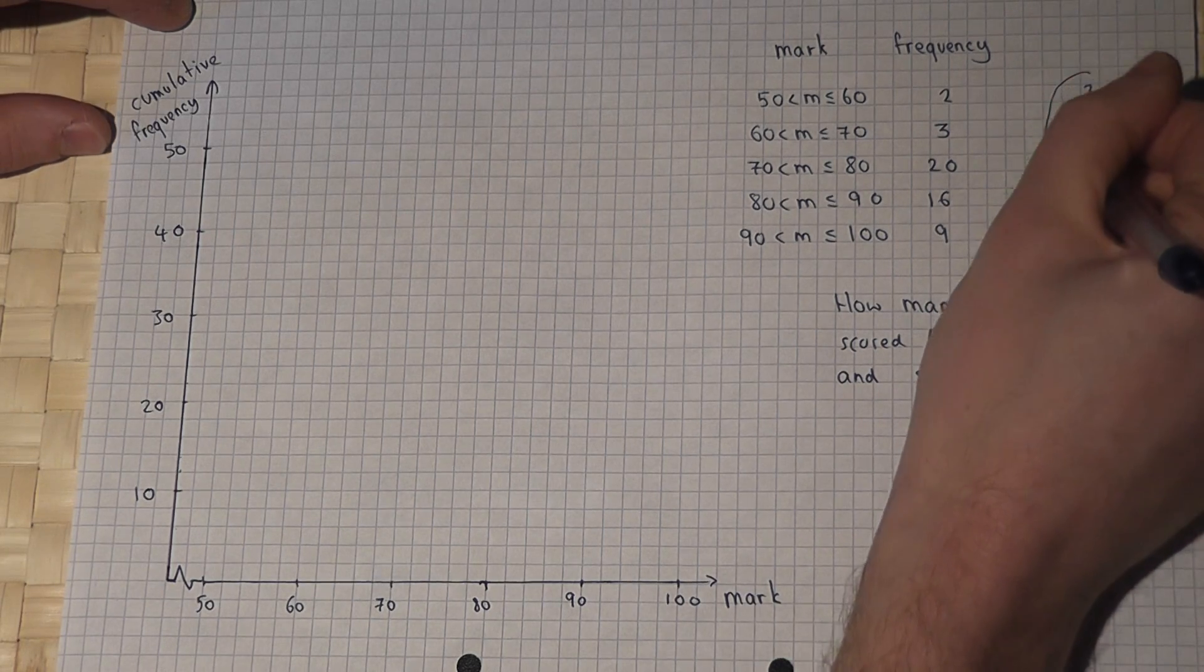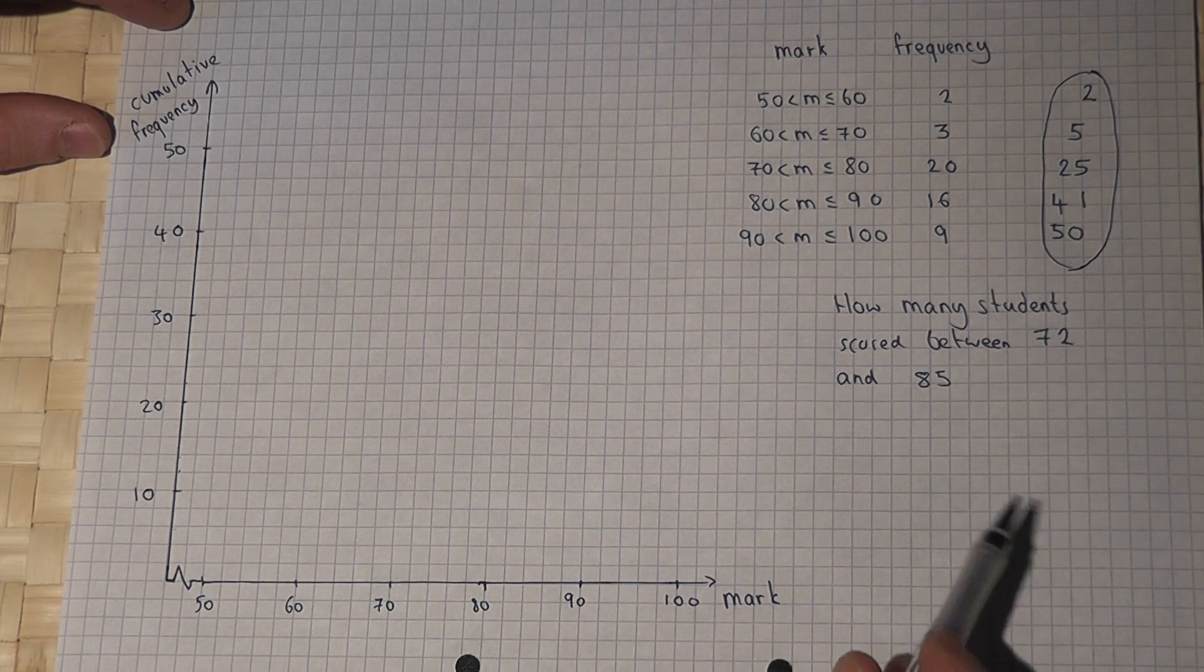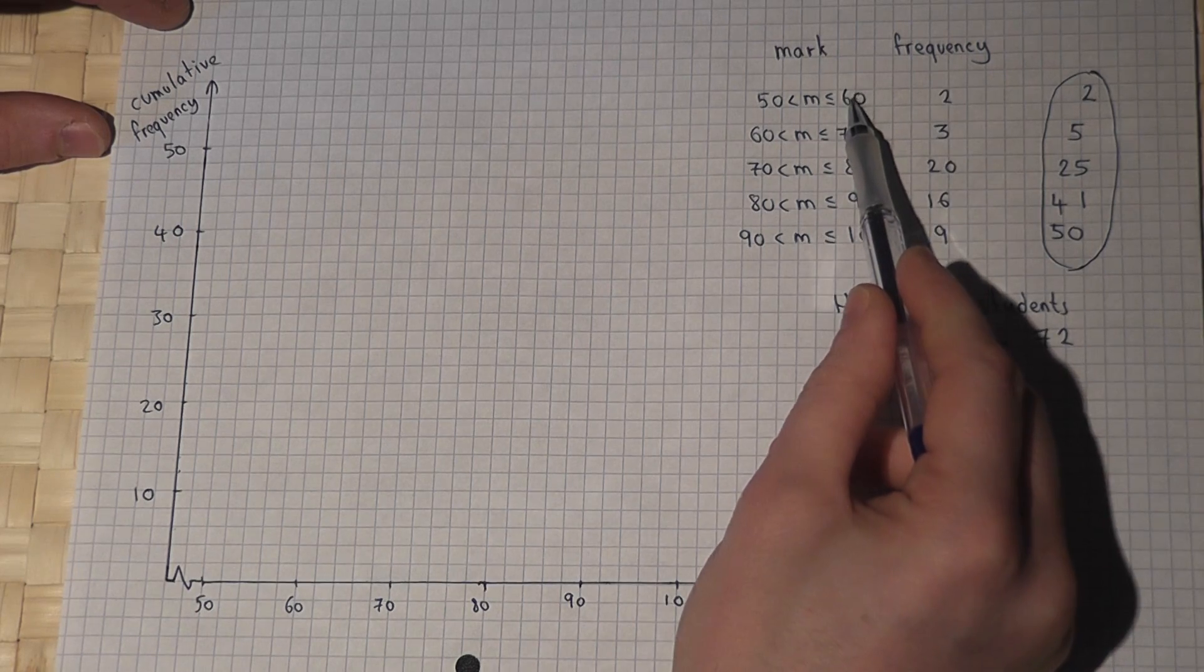And it's this here which we plot on our graph. And to do this we look at the end point of each of the classes.